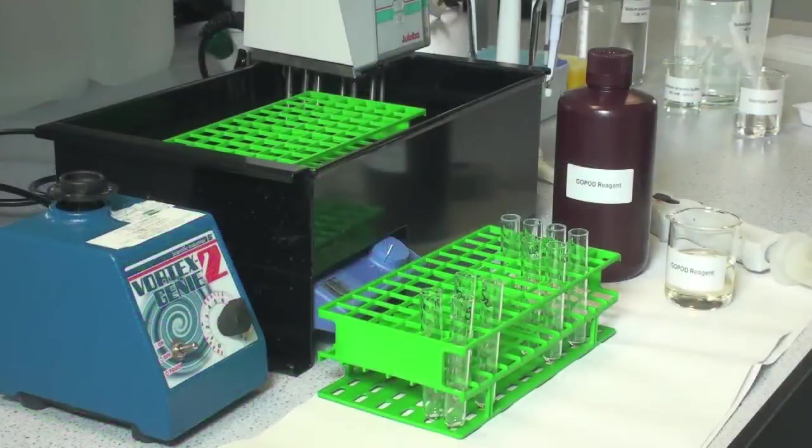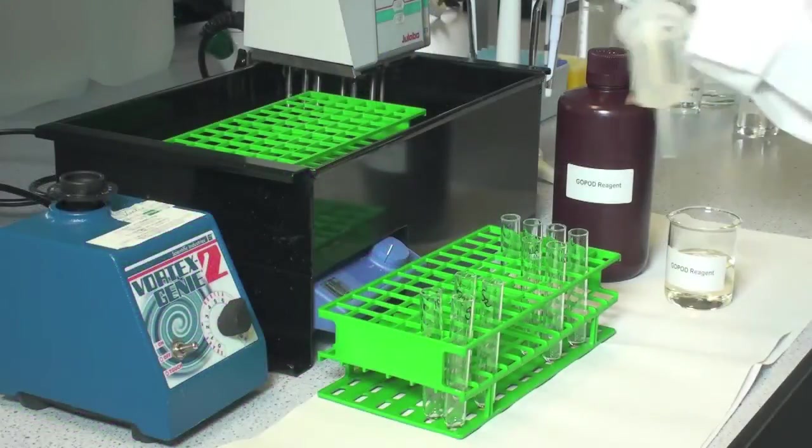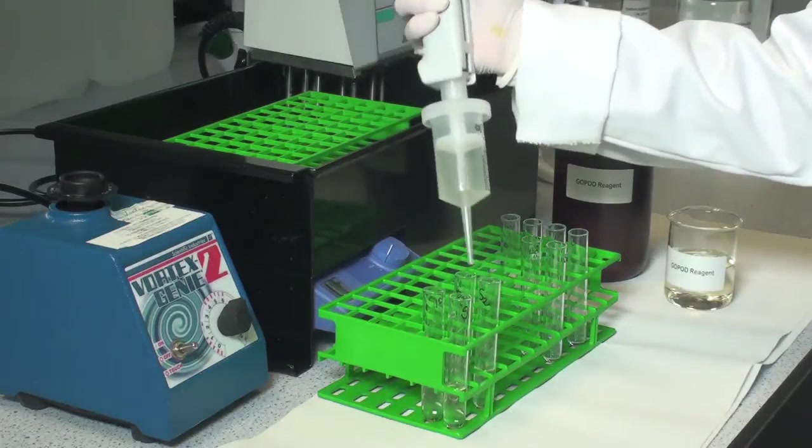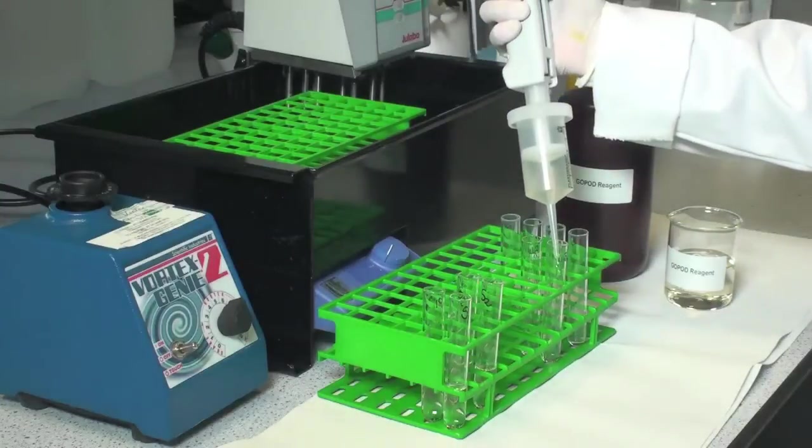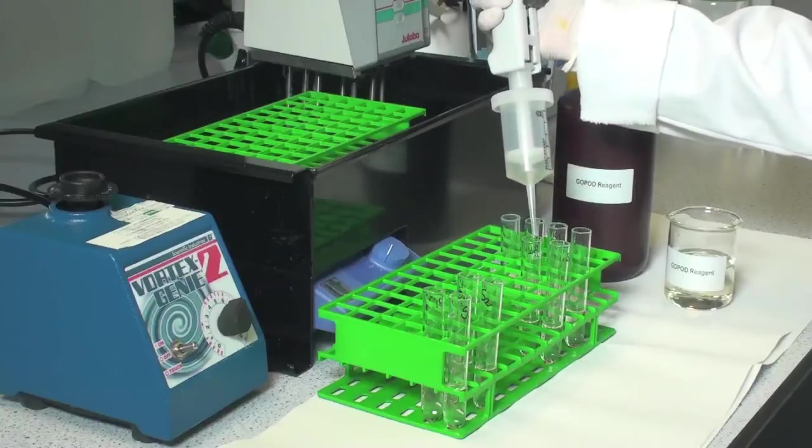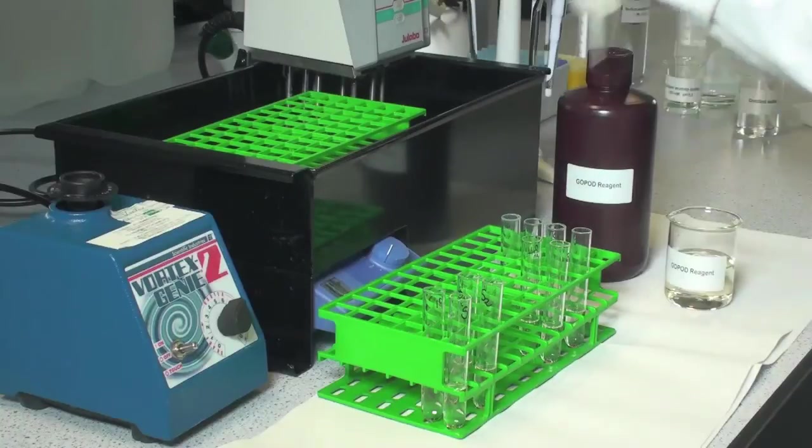Add 4 mL of GOPOD reagent to each of the reaction tubes, the glucose standard solutions, and the reagent blanks. You should also include a control sample in these incubations with a known level of beta-glucan content.